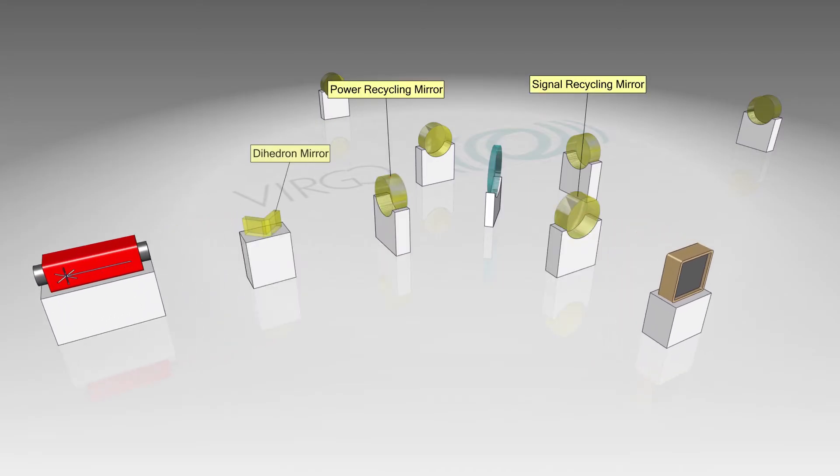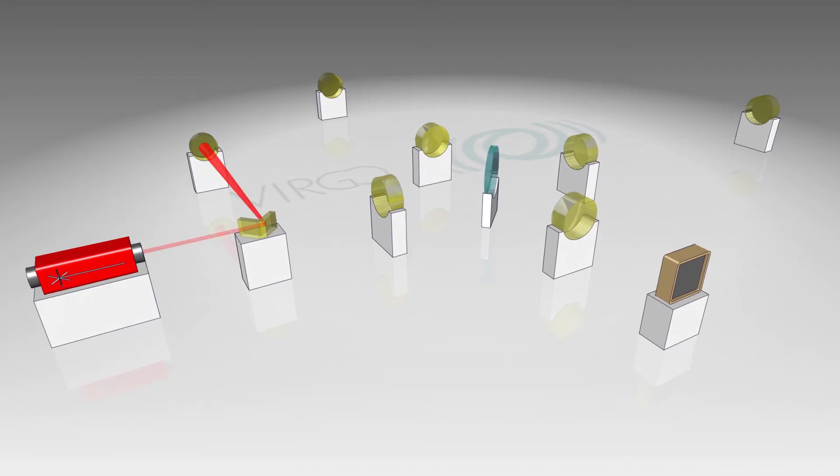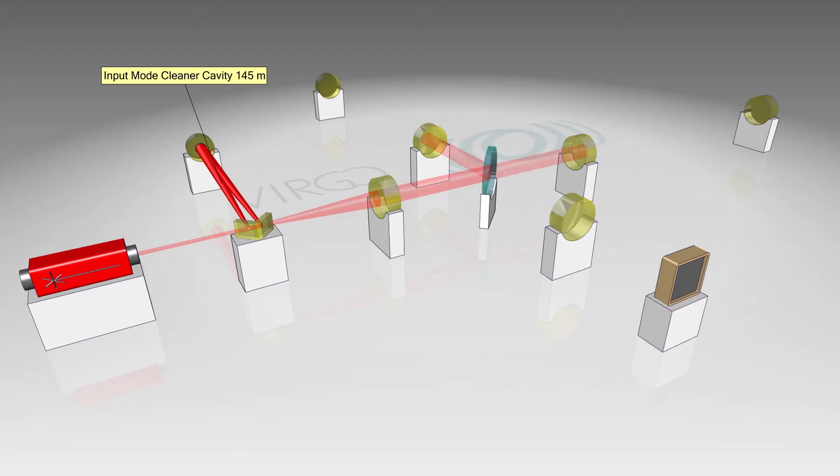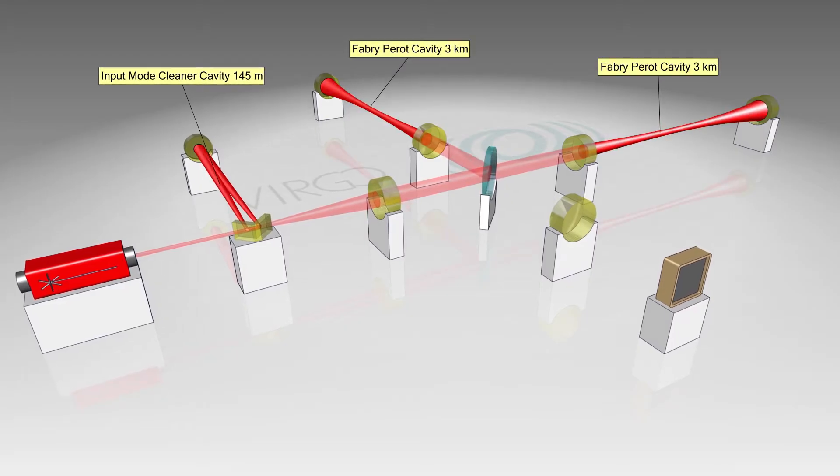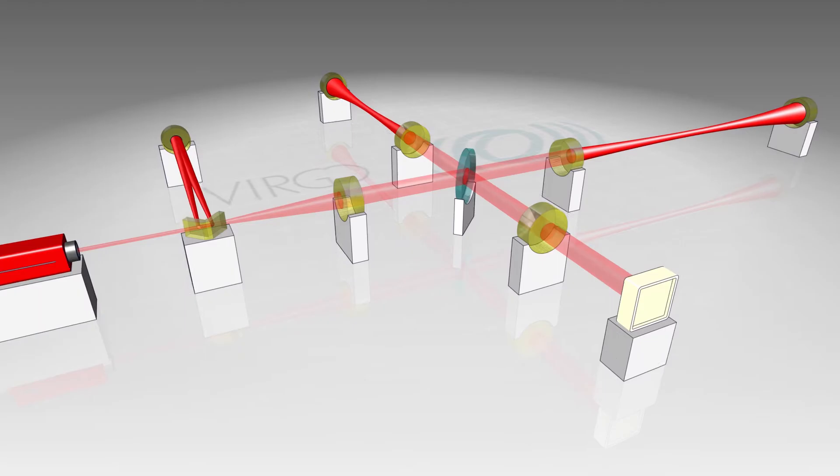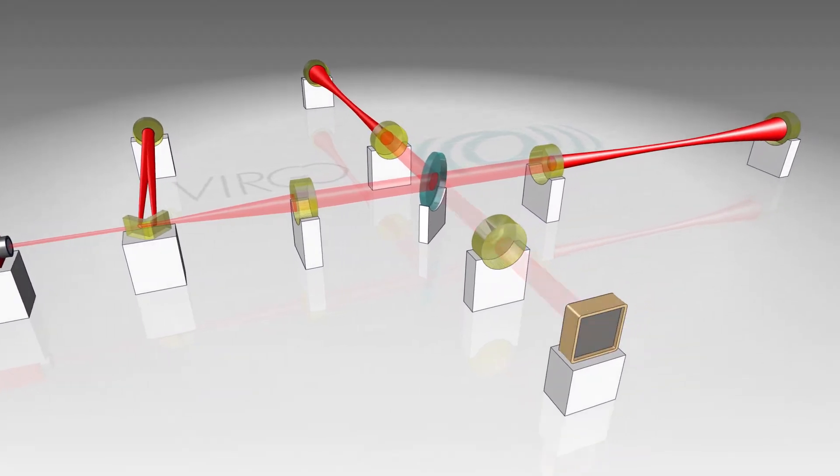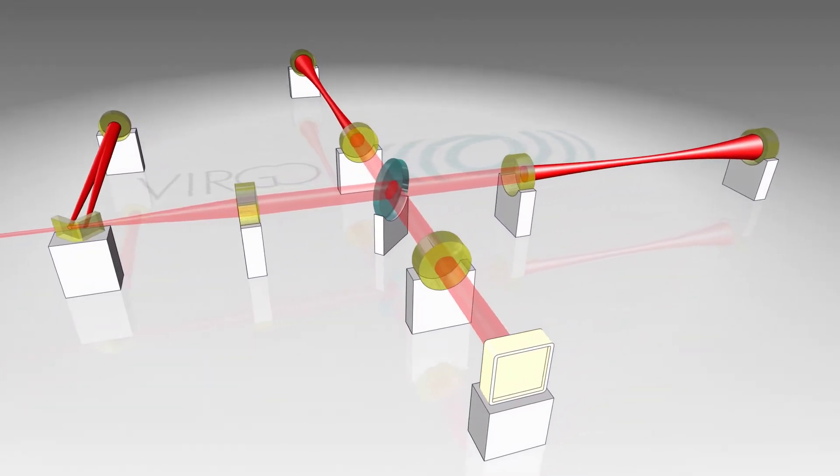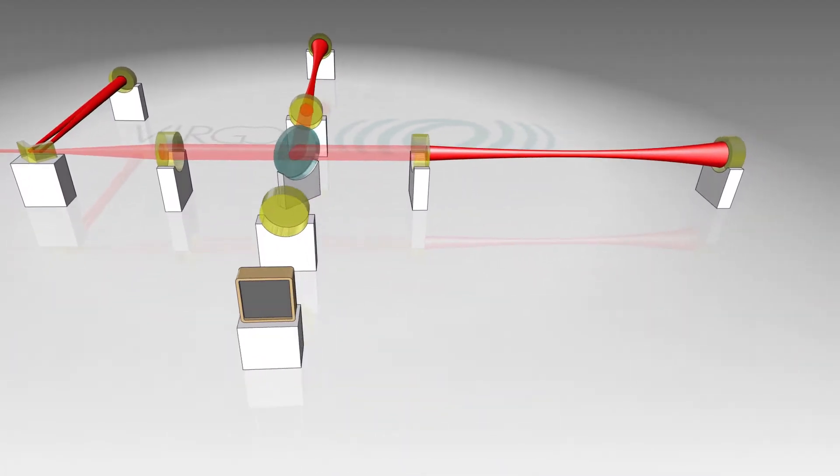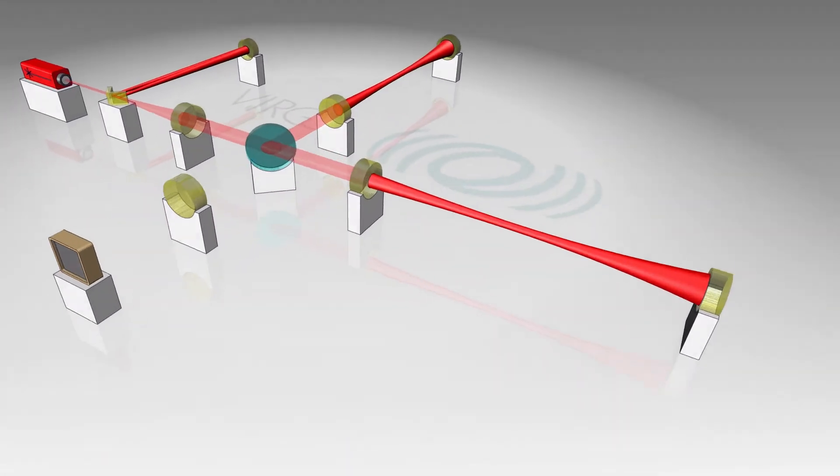The sensitivity is further increased with two additional mirrors, which recycle the outgoing light into the cavities, and with a so-called mode cleaner, which removes disturbing noise from the laser beam. The light power in the cavities is increased to hundreds of kilowatts.